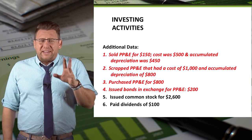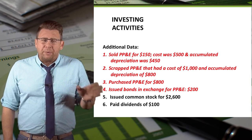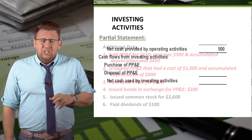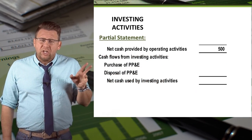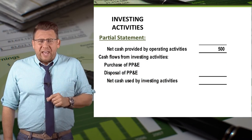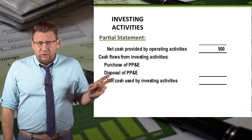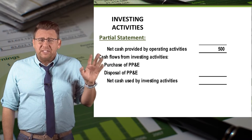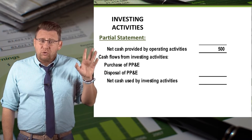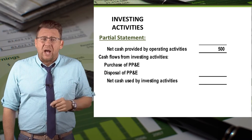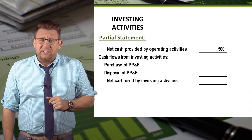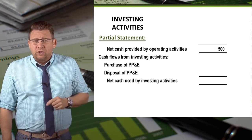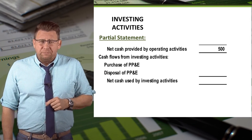Recall that PP&E stands for Property, Plant, and Equipment. A partial Statement of Cash Flows is shown here. The Investing Activities section is shown directly after the Operating Activities section, and I've identified a couple of items that will go into this section.